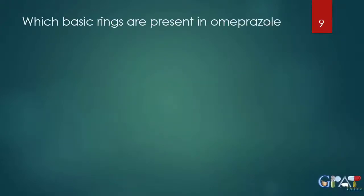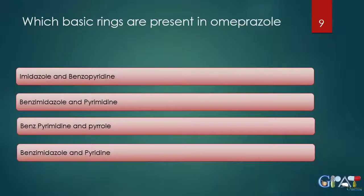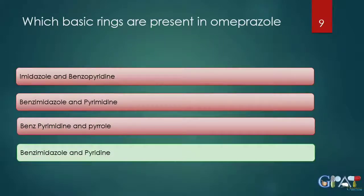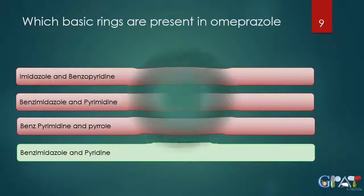The next question: which basic rings are present in omeprazole? The options are imidazole and benzopyridine, benzimidazole and pyrimidine, benzpyrimidine and pyrrole, or benzimidazole and pyridine. The answer is benzimidazole and pyridine — these two rings are present in the omeprazole structure.